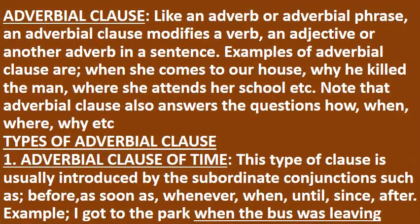Adverbial clause: like an adverb or adverbial phrase, an adverbial clause modifies a verb, an adjective, or another adverb in a sentence. Examples of adverbial clauses are: when she comes to our house, why he killed the man, where she attends her school, etc. Note that adverbial clauses also answer the questions how, when, where, why, etc.